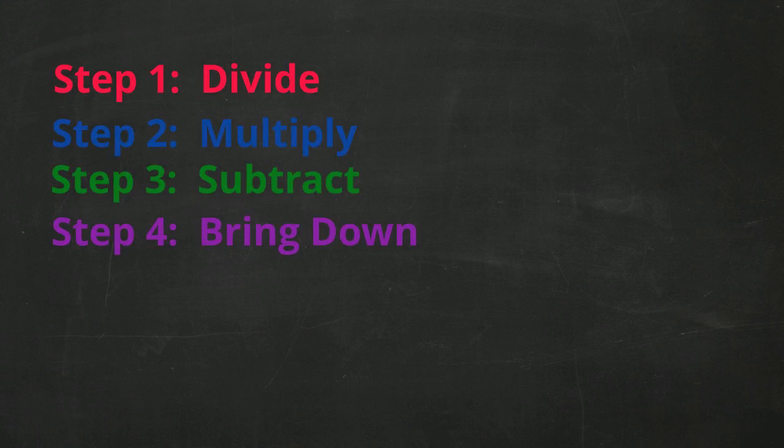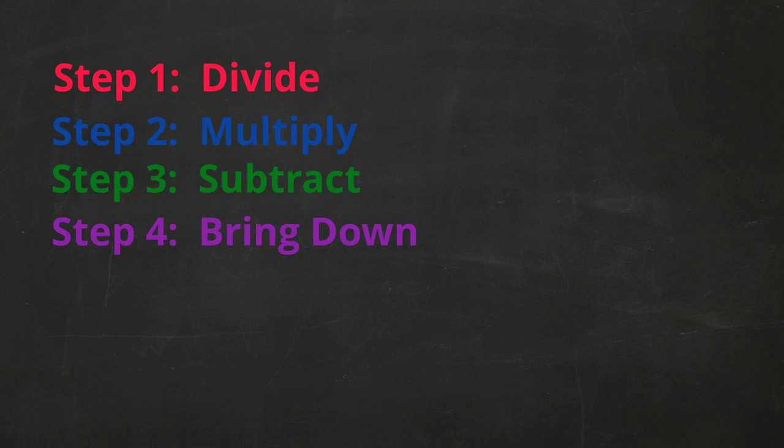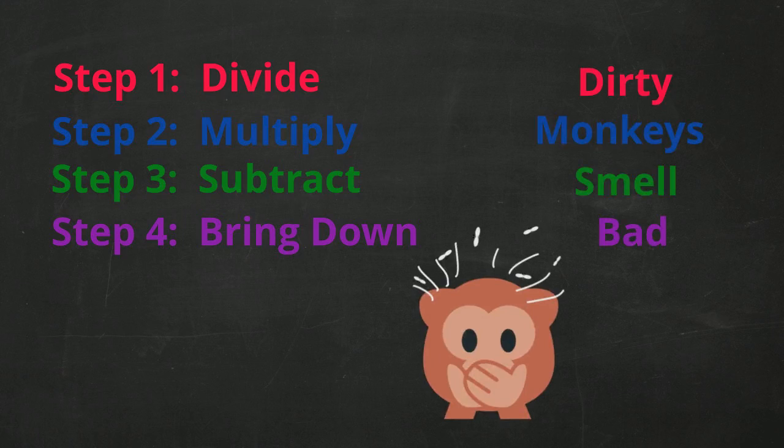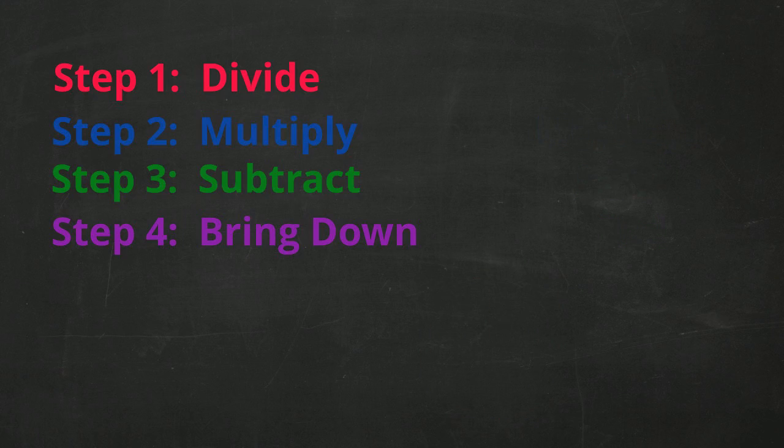Before we get started with our first problem, let's talk about the steps involved in long division. Long division has four steps, which we will repeat until we have our answer. Those steps are divide, multiply, subtract, and bring down. I like to give students a way to remember these steps, so think about this: dirty monkeys smell bad. As you work through more long division problems, you will eventually memorize those steps, and if you think about how dirty monkeys smell bad, it will help you remember. In the meantime, I will keep these steps on the screen so we can look at them as we go.